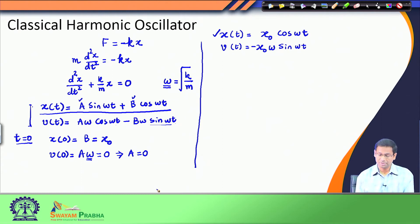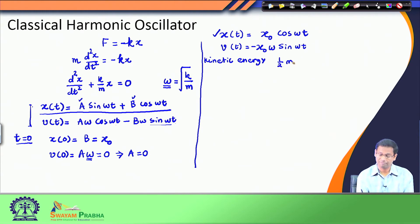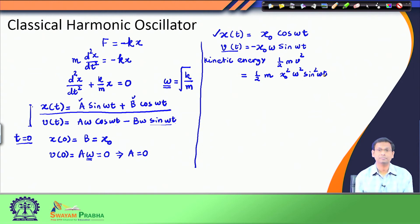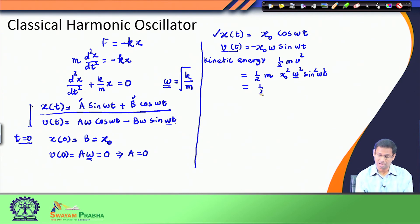Now we will discuss the kinetic energy. Since we already know the velocity, kinetic energy is half m v squared. If I know v, I would use it to get half·m·x₀²·omega²·sin²(omega·t). But since omega is the square root of k over m, omega squared equals k over m. So the m values cancel and I am left with half·k·x₀²·sin²(omega·t) as my kinetic energy.